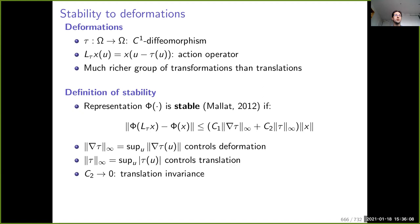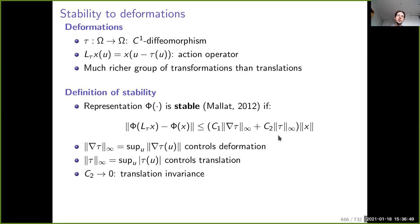What was less classical was the ability to characterize stability, which was introduced by Mallat for the scattering transform. His definition: if you have a representation phi, we say it is stable with respect to deformation if, when we compare phi of the deformed image with phi of x according to the appropriate norm, we get something that grows linearly with the amount of deformation. We characterize the amount of deformation with two quantities — one is the maximum amount of translation in the diffeomorphism.